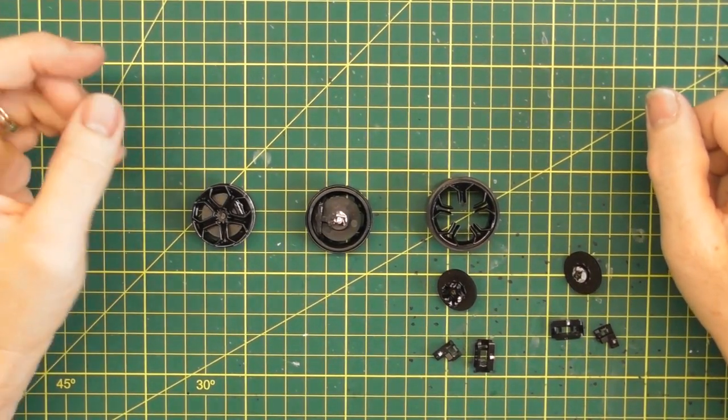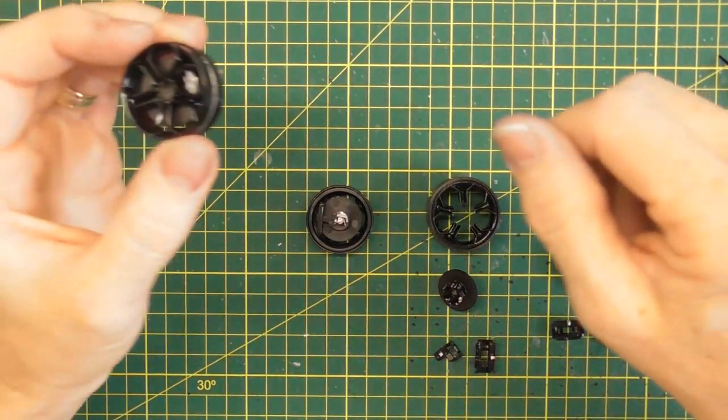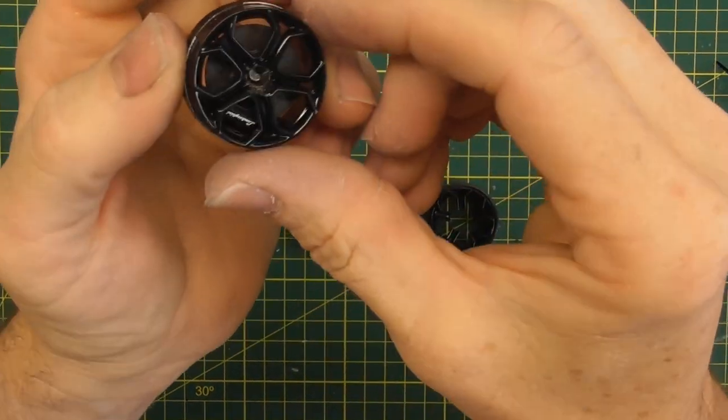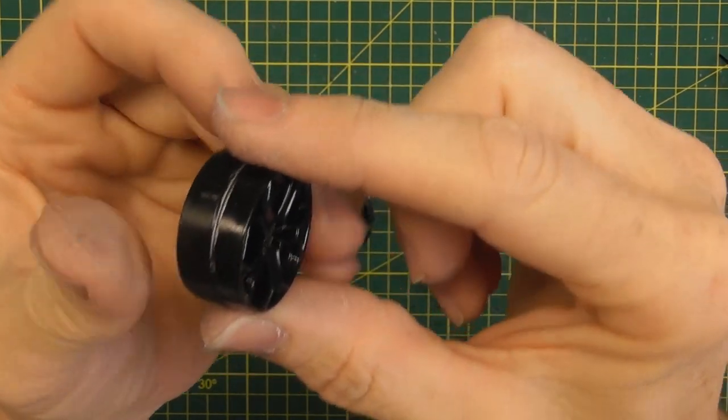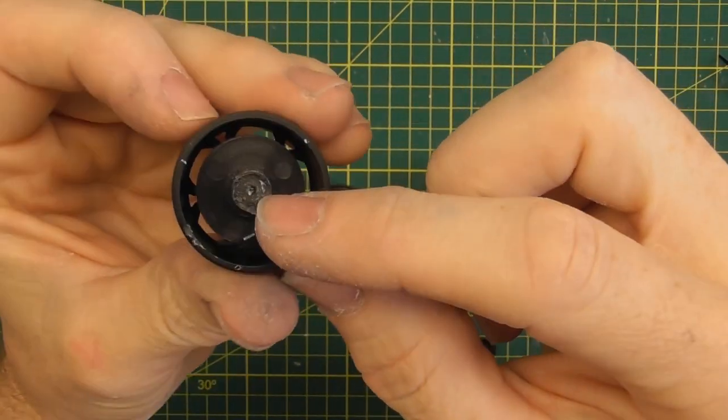Hi guys, Rob from Rob's Model Cars. In today's short video I'm going to show you why it's basically impossible to remove the Auto Art wheel from its molded-in hub.